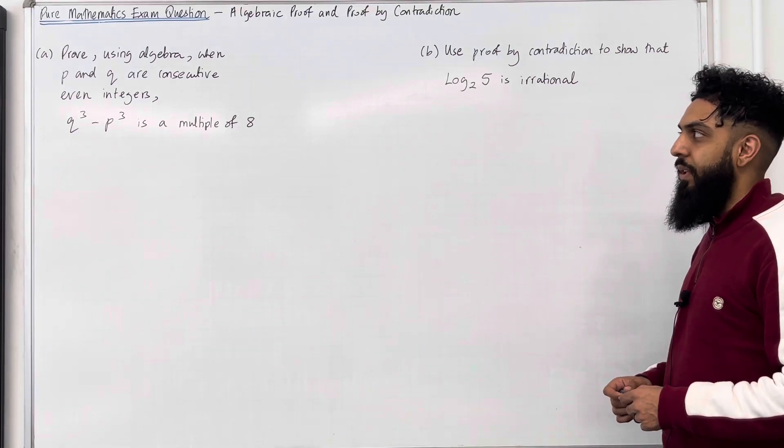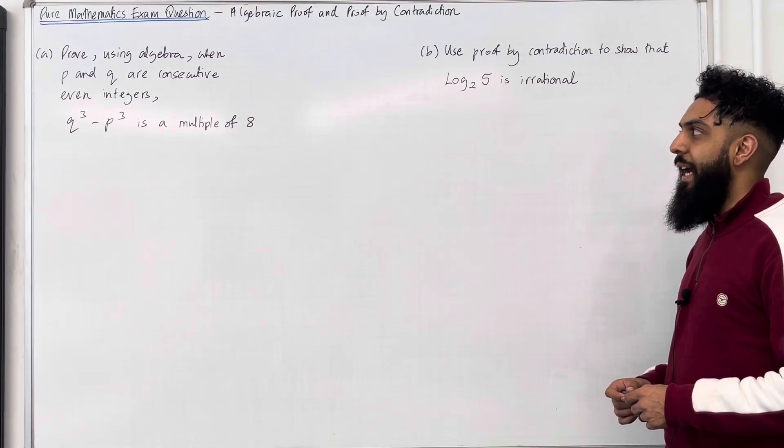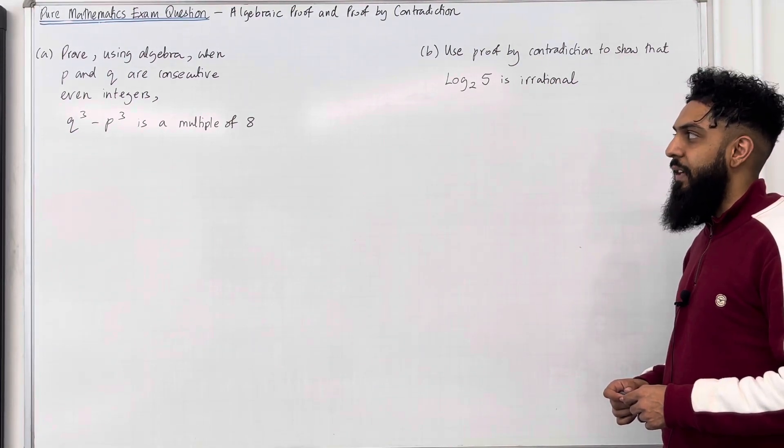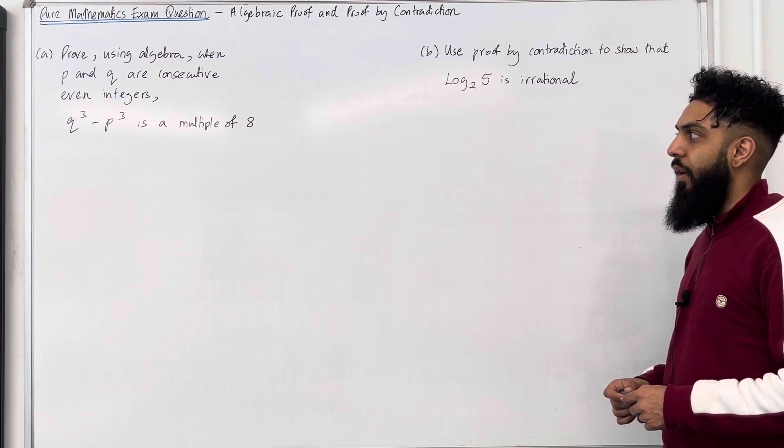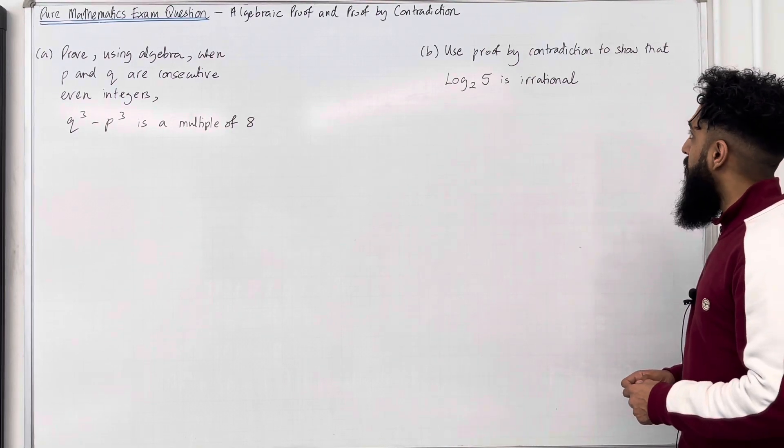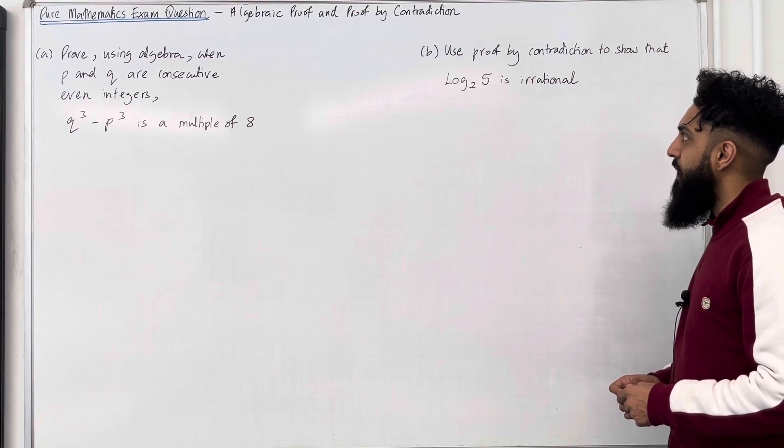Here is the exam question. Part A, prove using algebra when P and Q are consecutive even integers, Q cubed minus P cubed is a multiple of 8. Part B, use proof by contradiction to show that log base 2 of 5 is irrational.